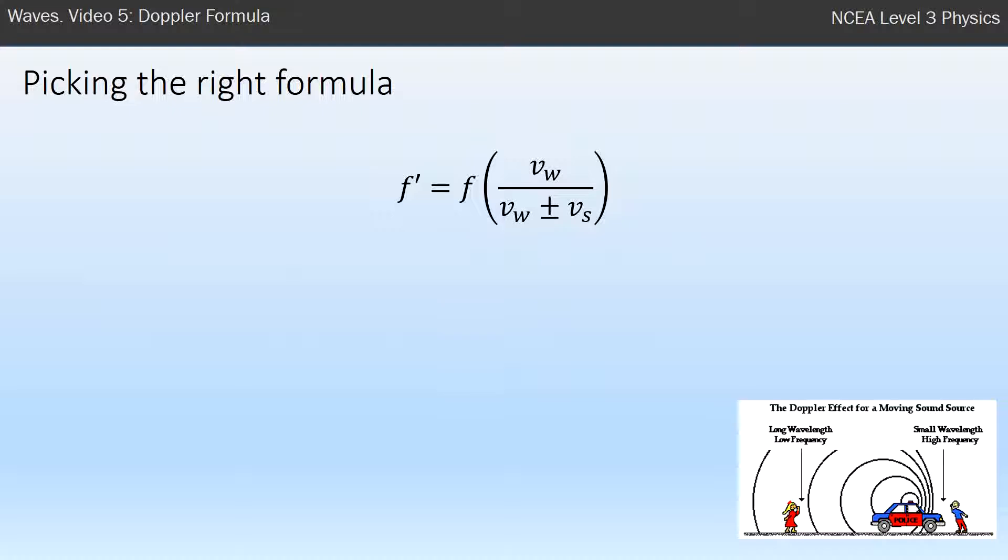You need to be able to pick the right formula because if you look very carefully at this formula you'll see there's a plus minus, so it's effectively two formulas. So you could pick one where you do VW plus Vs and you could pick one where you do VW minus Vs. So which one do you use?